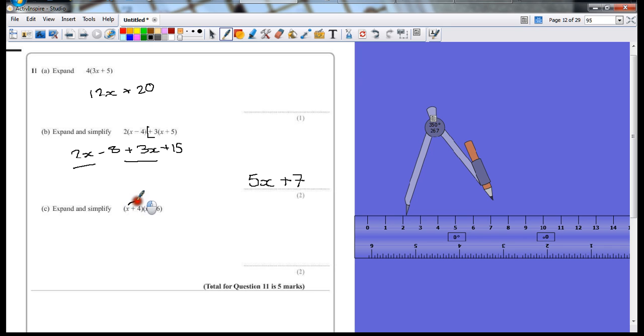So start off by multiplying x by x. So x times x is x squared. Each time I do a calculation, I'll write down the answer. Next, I've got 4 there times by 6. So it's plus 4 times plus 6, which is 24.